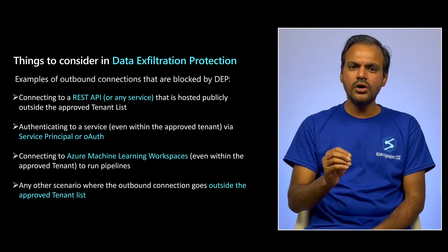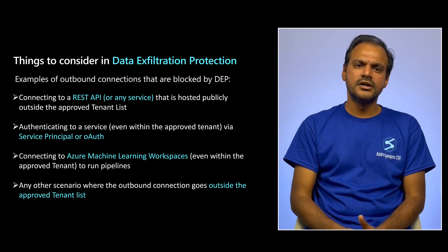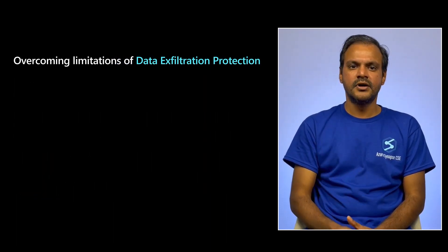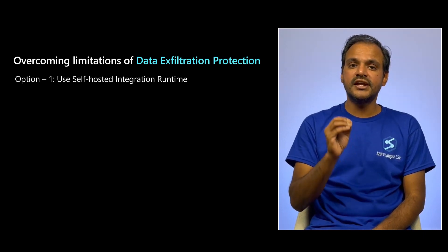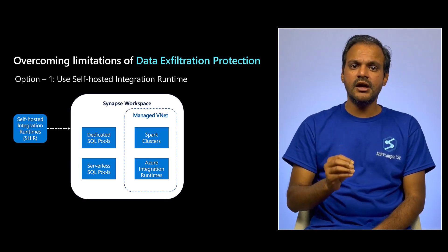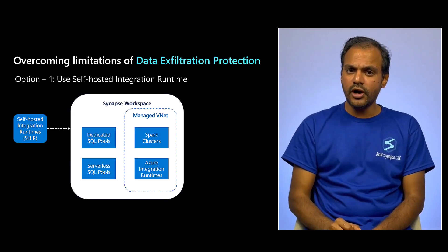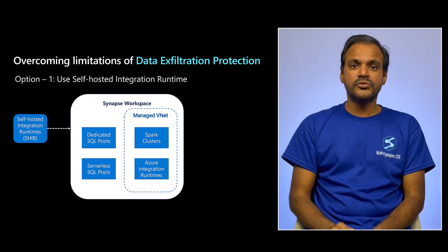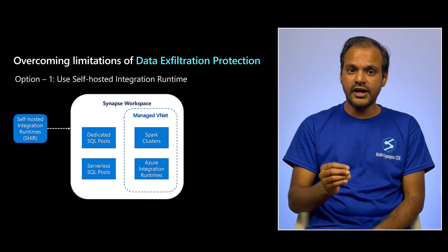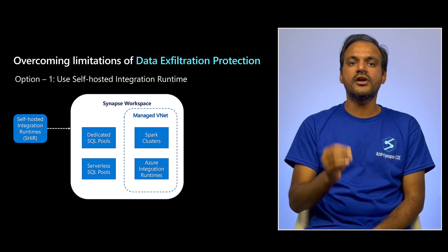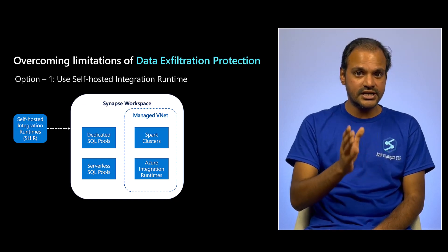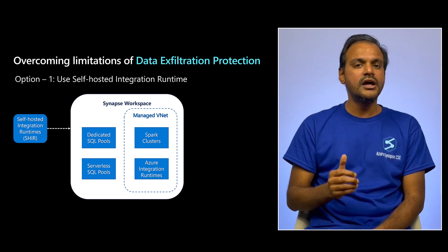This is by design. So how do you overcome this? There are two approaches based on various customer scenarios. One is to use a self-hosted integration runtime, or SHIR, for connecting to these services. As we saw in our previous video, SHIR is deployed outside the managed VNet and is fully managed by customers in their own networks. This gives you the flexibility to define fine-grained outbound firewall rules for SHIR, such as allowing specific websites, port numbers, etc., using a firewall appliance or a network security group.